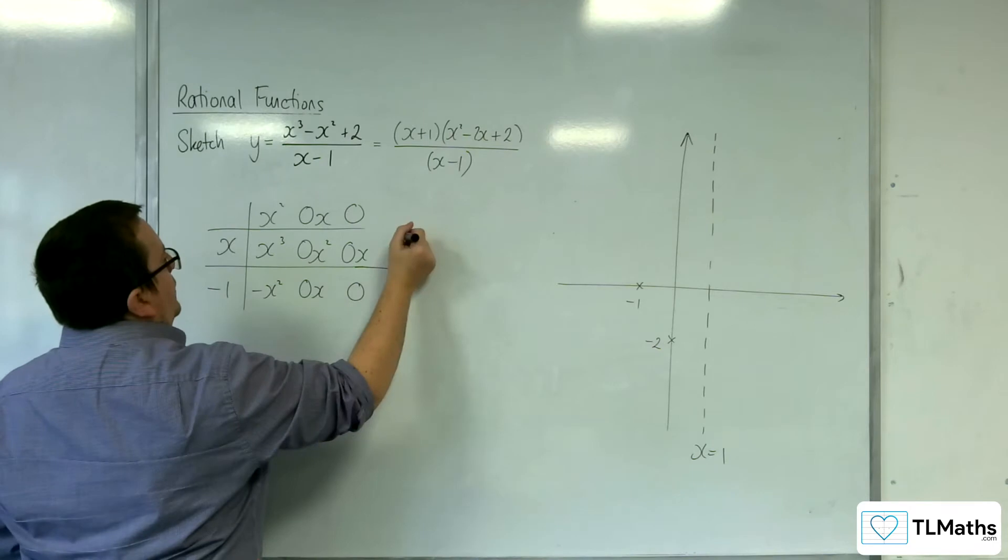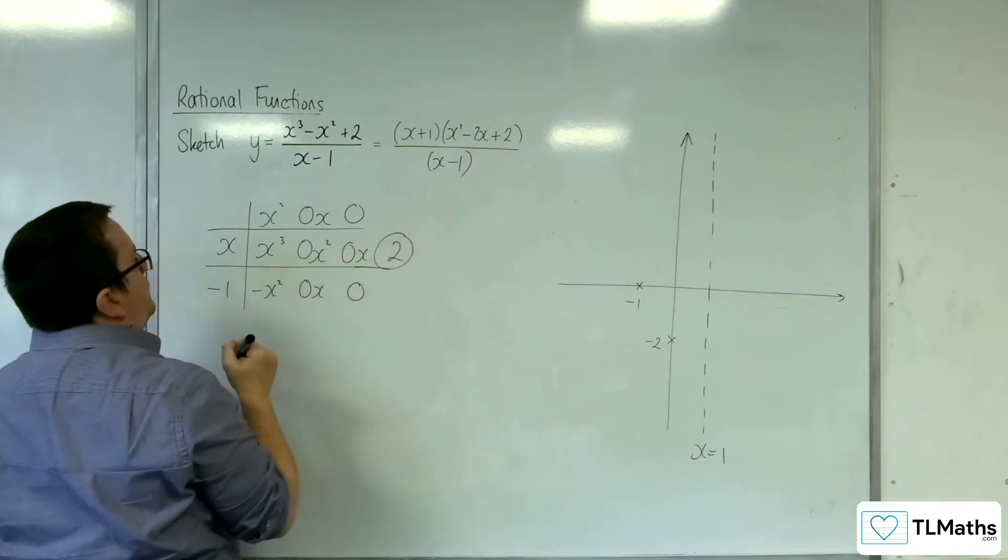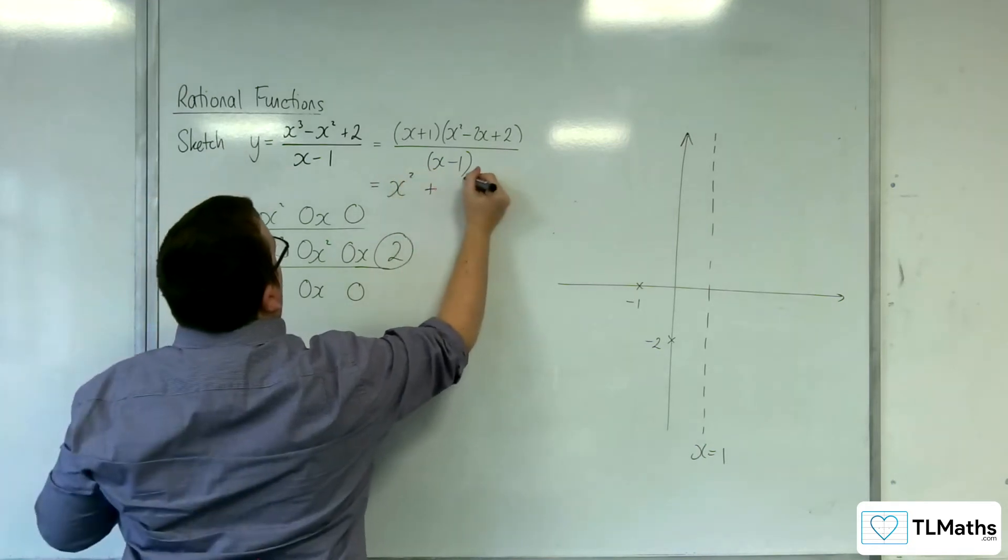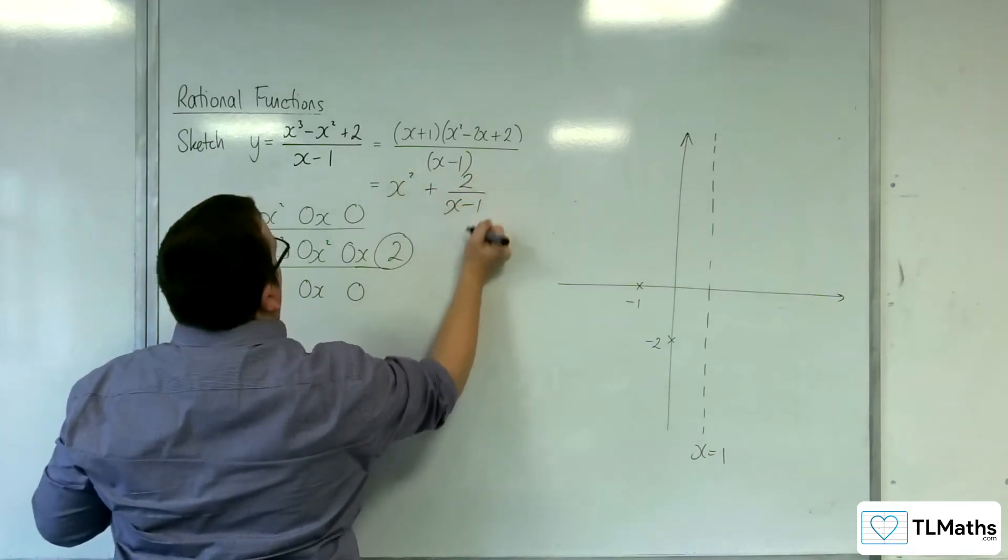And so that's going to be my remainder. So we can write this as x squared plus 2 over x take away 1.